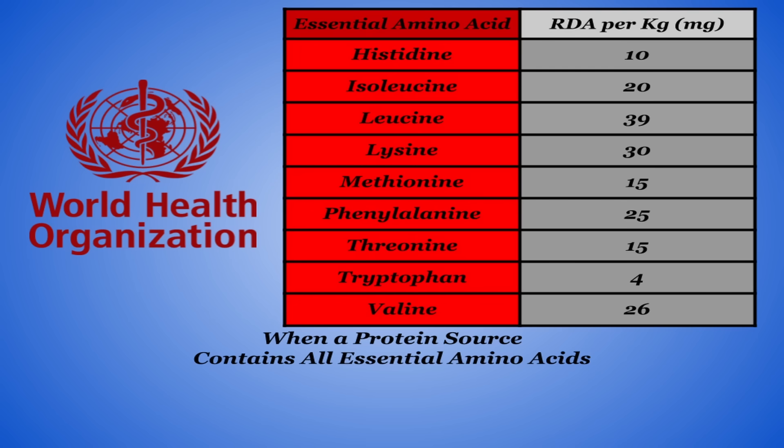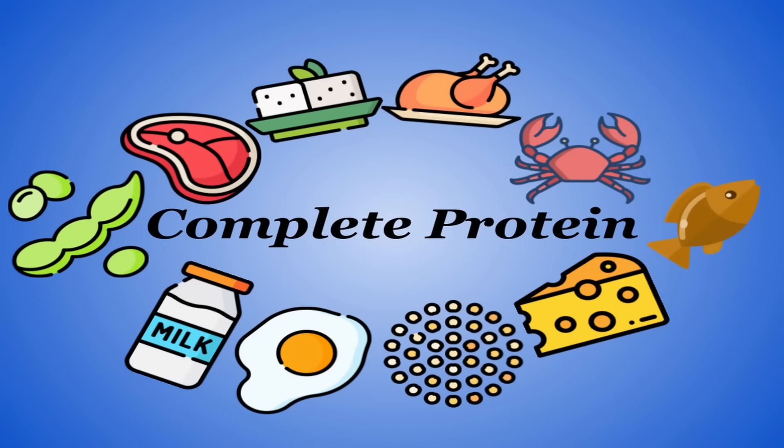Now, when a protein source contains all essential amino acids in sufficient amounts, it's called a complete protein. Consuming complete proteins regularly can make it easier to make sure that you are getting all nine. However, realistically, simply eating enough protein almost guarantees that this will happen too. But certain restrictive diets with limited protein sources may struggle with this.